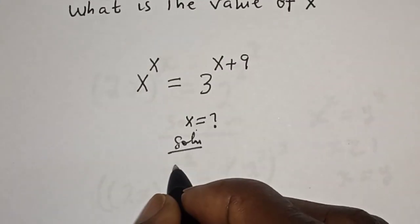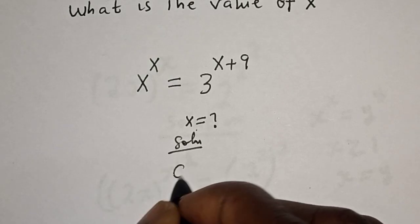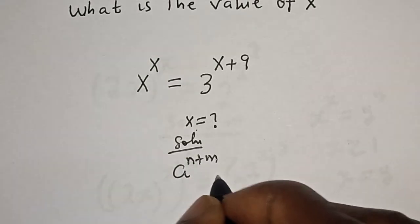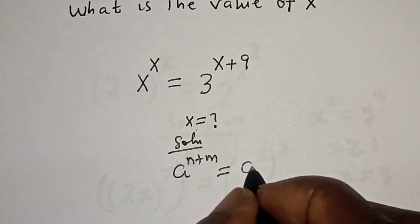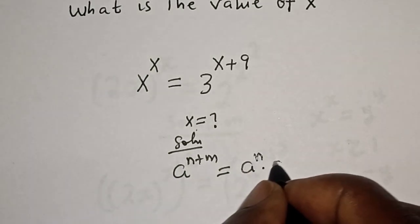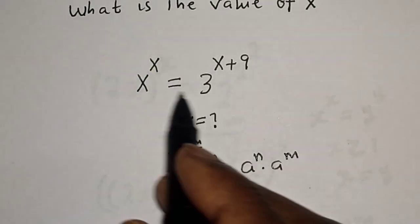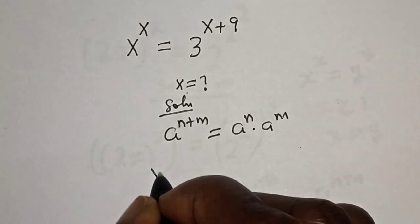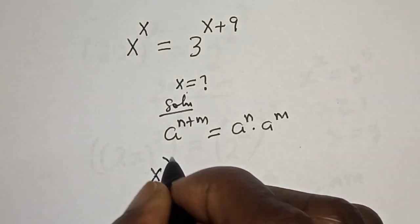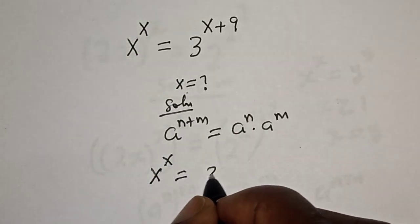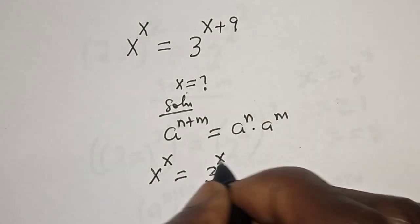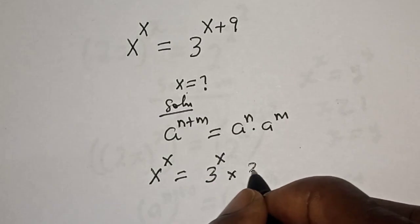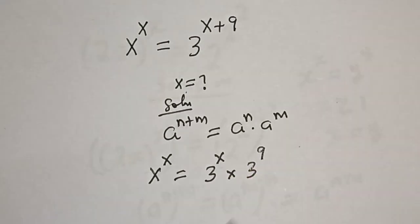Take note of this exponential rule: A to the power of N plus M is equal to A to the power of N multiplied by A to the power of M. So S to the power of S is equal to 3 to the power of X multiplied by 3 to the power of 9.